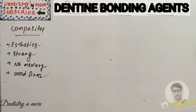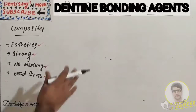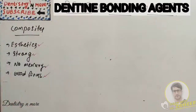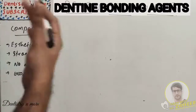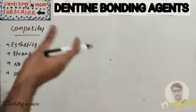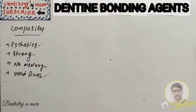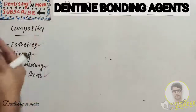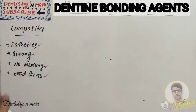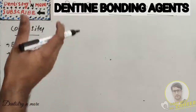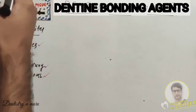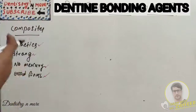Hello everyone, welcome back to another session in dentistry and more. The topic for today is dentin bonding agent on an undergraduate level. It is a confusing topic - they've got around seven generations of bonding agents. Some have a combination of etchant and primer, some have a single bottle with all three components. There are techniques known as total etching and selective etching, so I'll try to make it simpler.